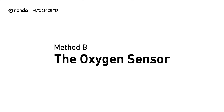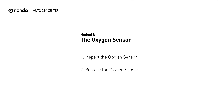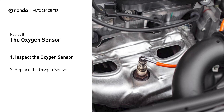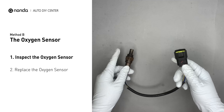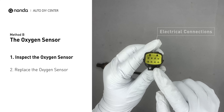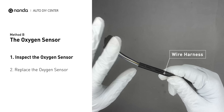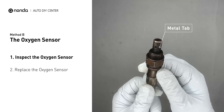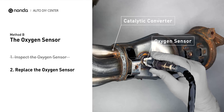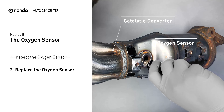Method B: the oxygen sensor. Oxygen sensors are mounted directly onto the exhaust pipe near the catalytic converter. Locate the sensor that responds too slow as it ages. Visually check the oxygen sensor's electrical connections, wire harness, and metal tabs for any damages. If damages are found, then replace the oxygen sensor.